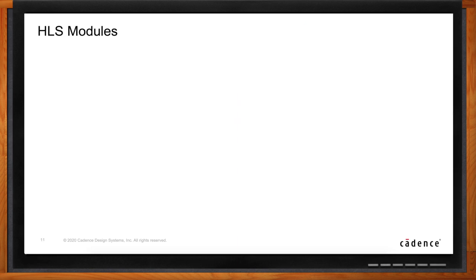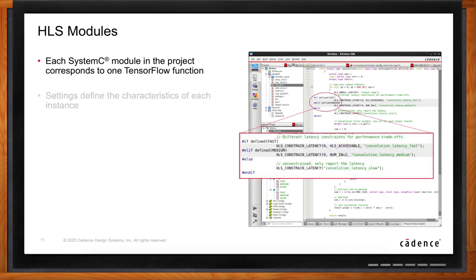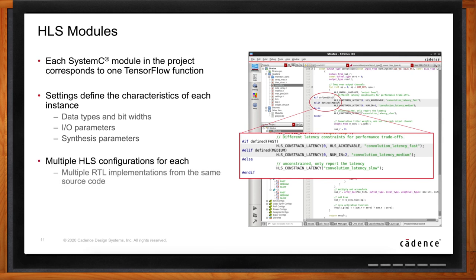Once my data flow is figured out, how do I get into HLS? You write the SystemC modules — each module in the project corresponds to one TensorFlow function — and then use settings to define the characteristics of each instance. In the Stratus environment you have multiple HLS configurations, so you can take the same module, say a conv2d layer, and create different RTL implementations with different characteristics. For example, different latencies resulting in different areas — some very fast blocks, some slow — and you can do trade-off analysis by synthesizing all of these from the same SystemC code.